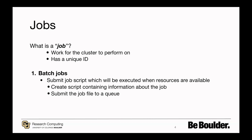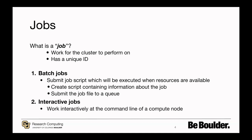Batch jobs are jobs submitted to the cluster to be run in the background when resources are available. Once you've submitted a batch job, the cluster will place your job into a priority queue and run it when the resources are available. The second type of job is an interactive job. Interactive jobs are meant for users who want to run or troubleshoot programs in real-time on the command line.